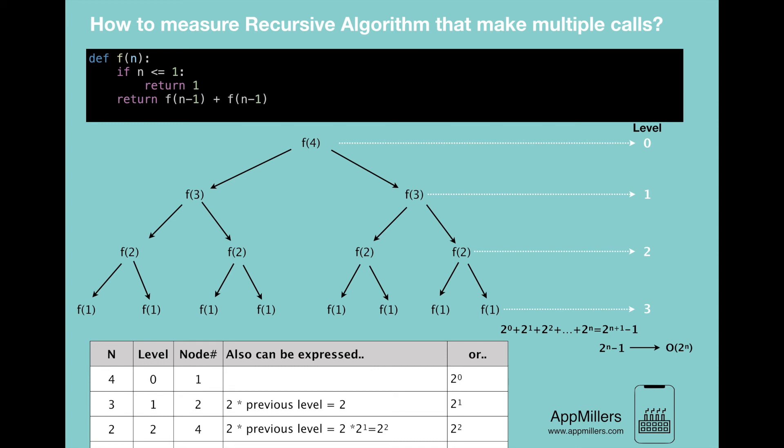So from here, we can come to the conclusion that when you have a recursive function that makes multiple calls, the runtime often will look like O(branches^depth), where branches is the number of children in each node, which is the number of times each recursive call branches.